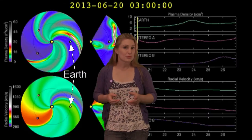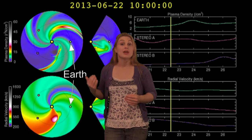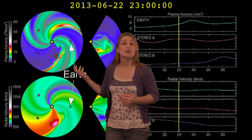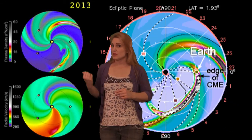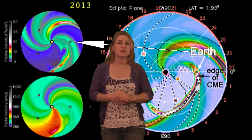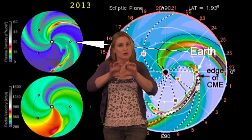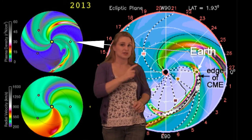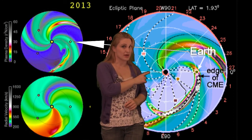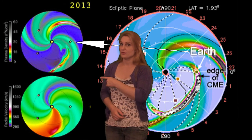But about six hours later, another prediction was put out, and this time the CME doesn't hit Earth at all — it doesn't even graze Earth. So which one is it? A lot has to do with the orientation of that slinky. If that slinky had been oriented horizontally as opposed to vertically, we probably would have seen a geomagnetic storm scenario instead of the scenario we actually got.